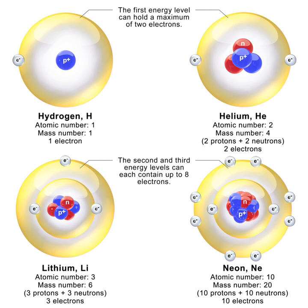Most fission reactors use a neutron moderator to slow down, or thermalize, the neutrons that are emitted by nuclear fission so that they are more easily captured, causing further fission. Others, called fast breeder reactors, use fission energy neutrons directly.